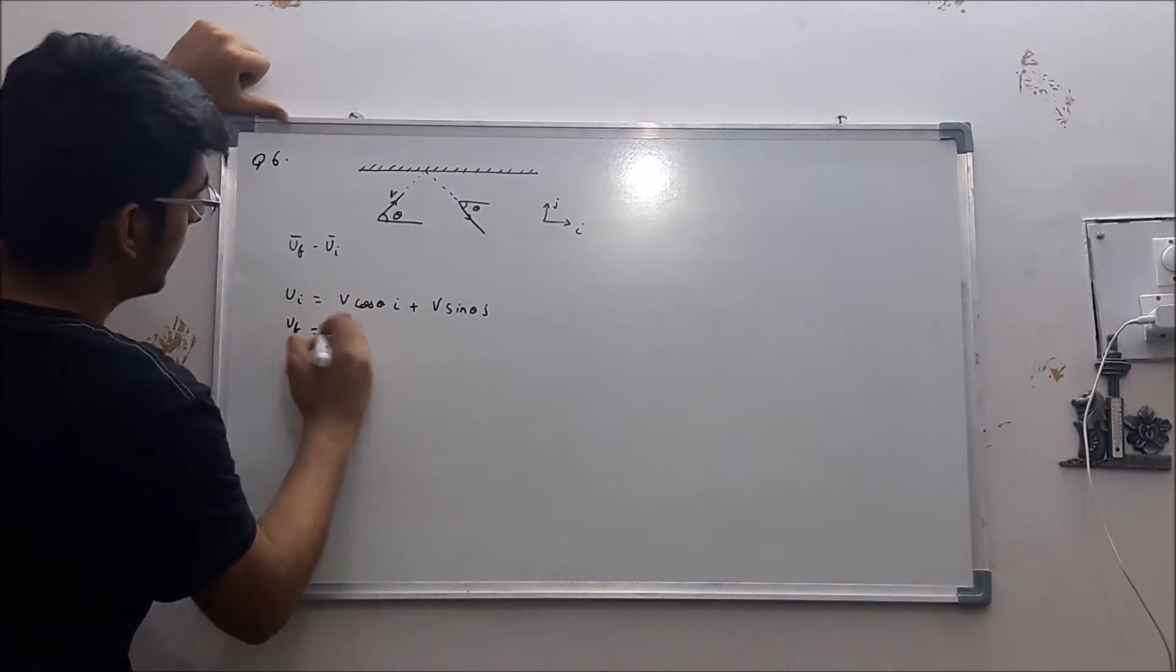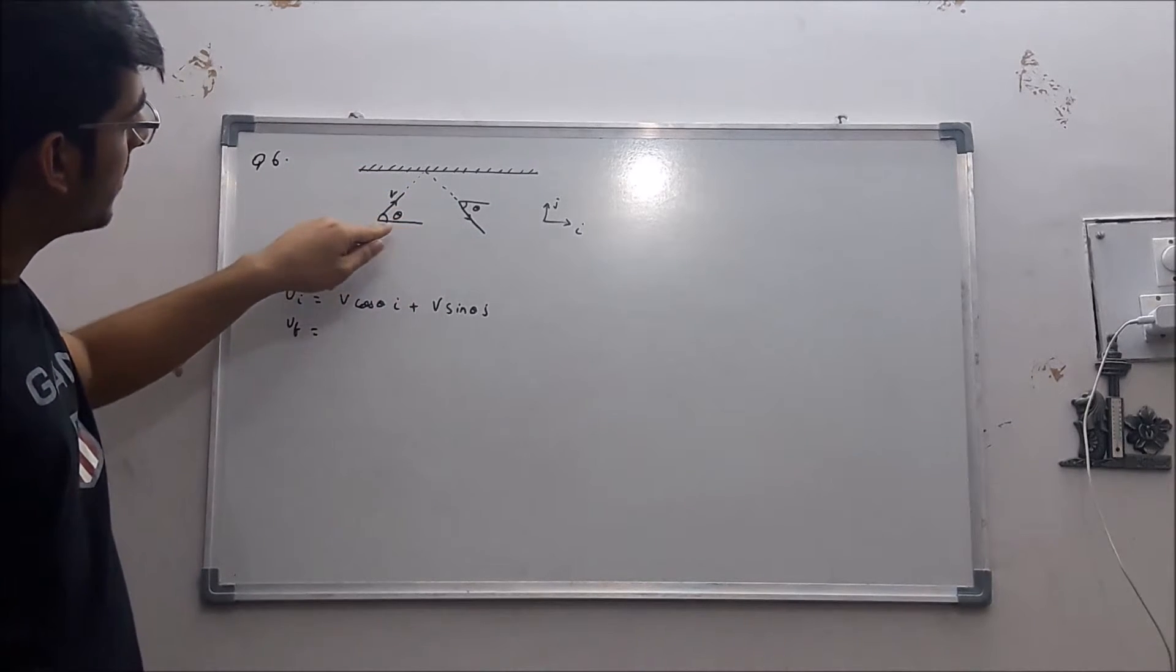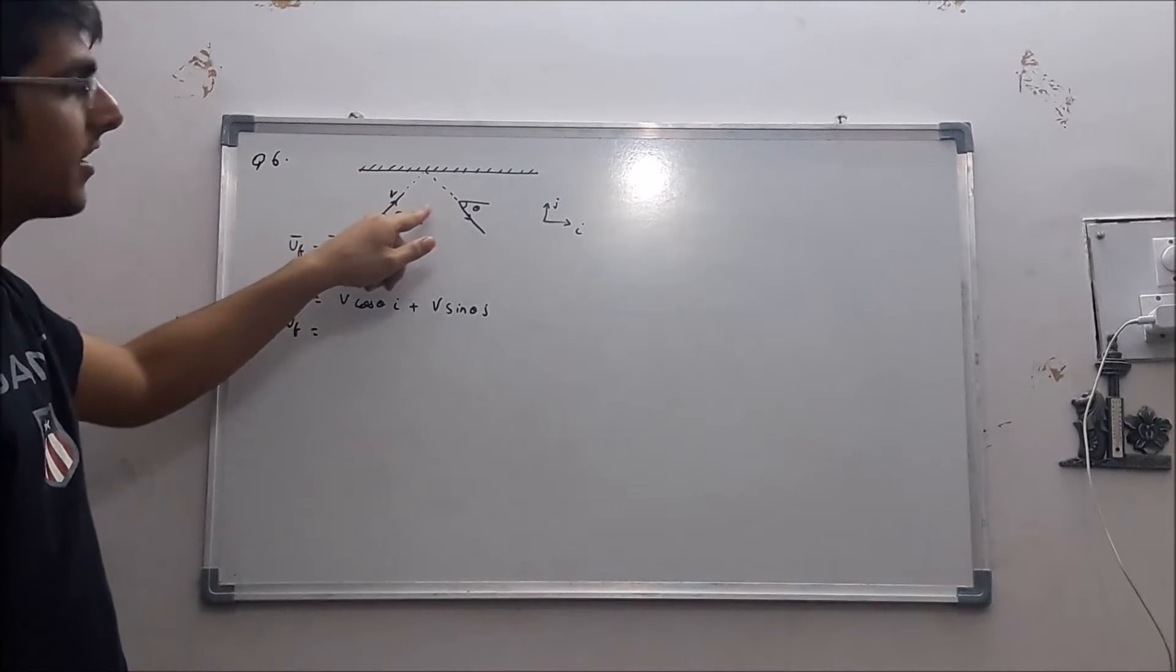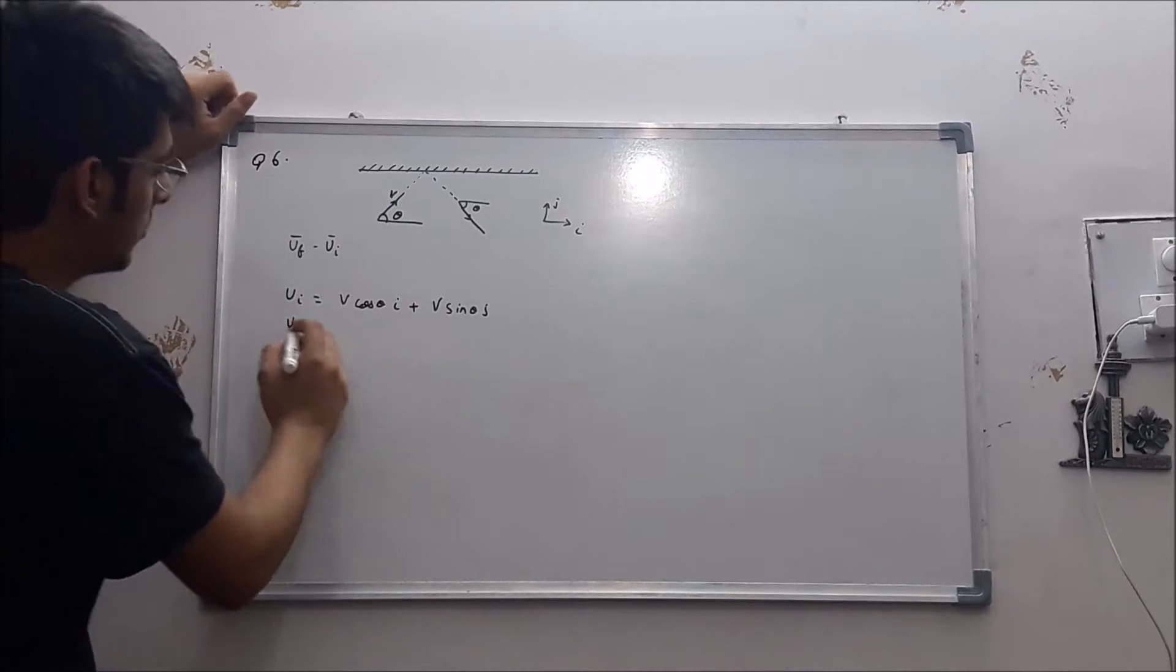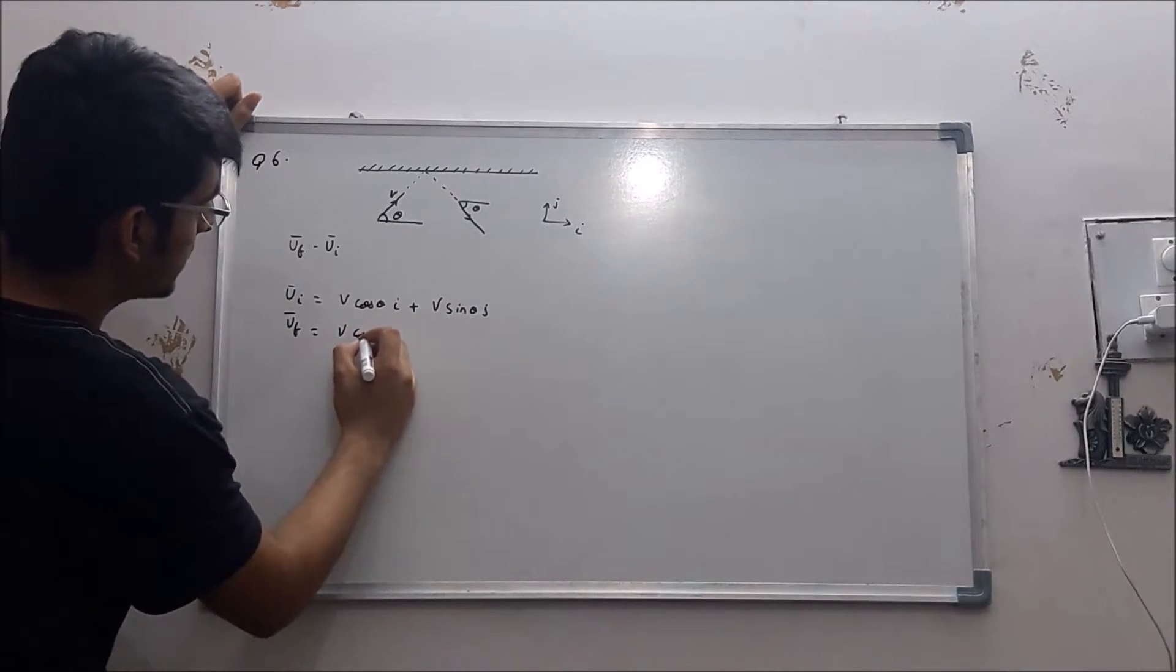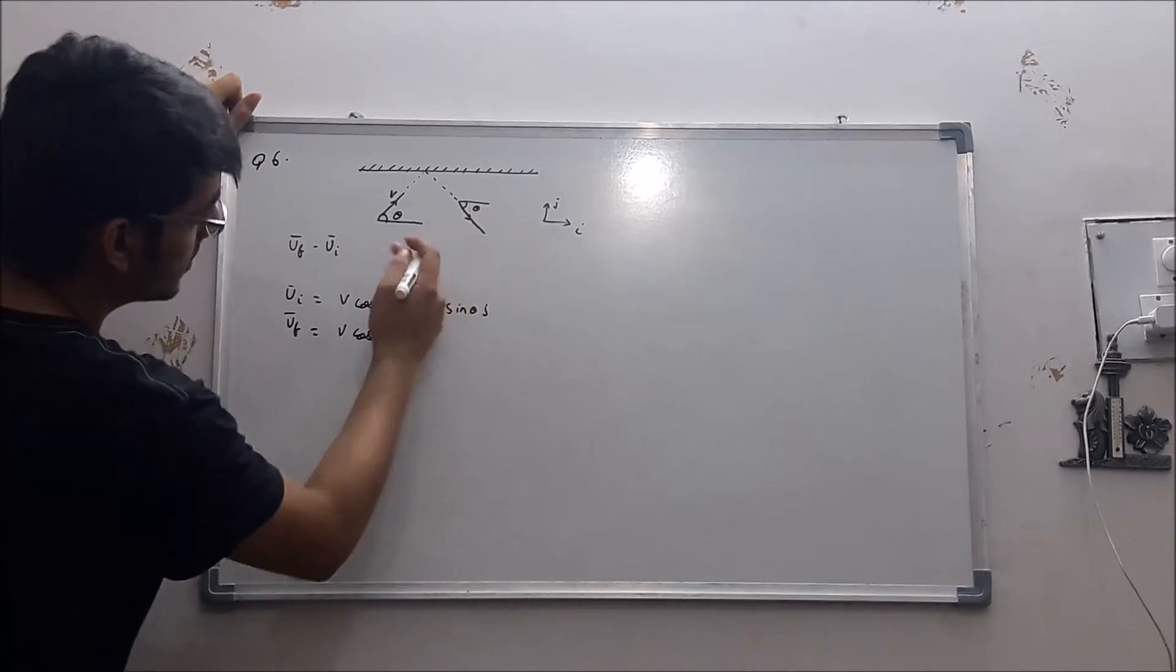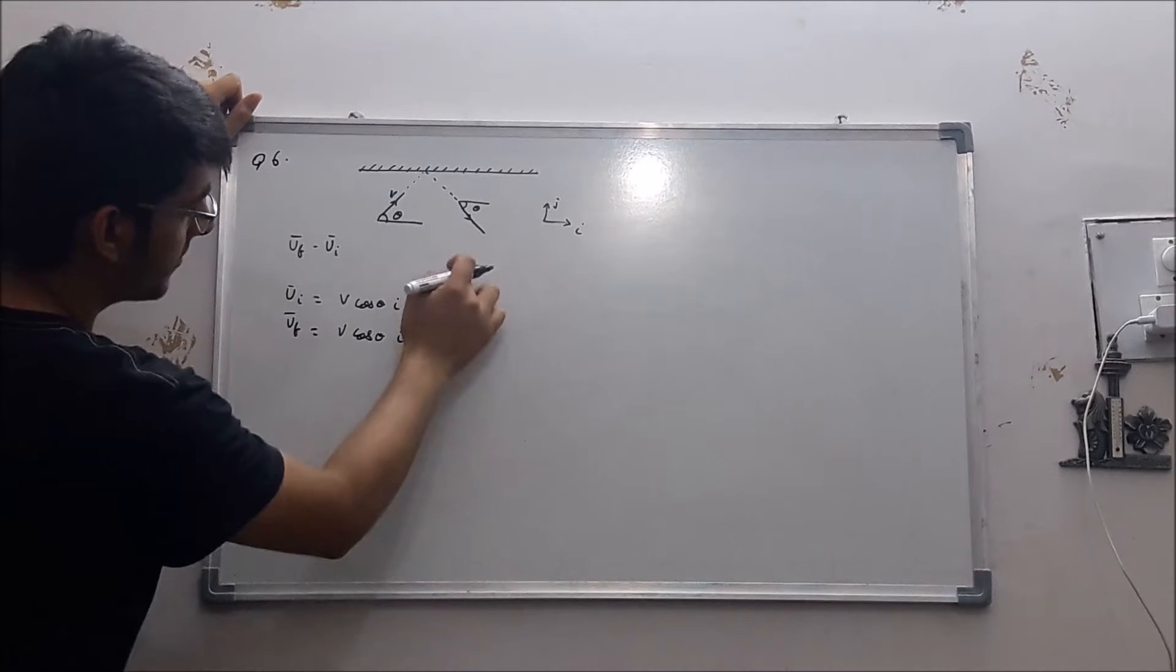And final velocity will be—basically the direction is changing but the angle with the horizontal will remain as theta. So final velocity will be v cos theta i minus, because direction has changed and this is negative j, v sin theta j.